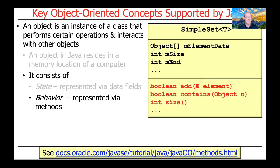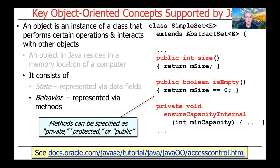Classes and objects also have behaviors, which are represented by methods. We can see we have several methods defined here: add, contains, size, and so on. Methods can also be specified as private, protected, or public. So size and isEmpty are public methods, however we have a private method called ensureCapacityInternal — it's only intended for use by the implementers of SimpleSet, not by clients or users of SimpleSet.